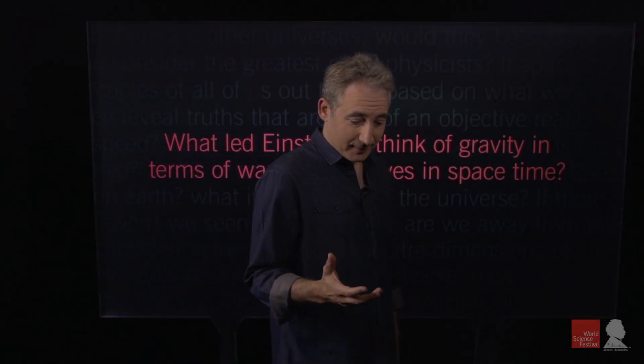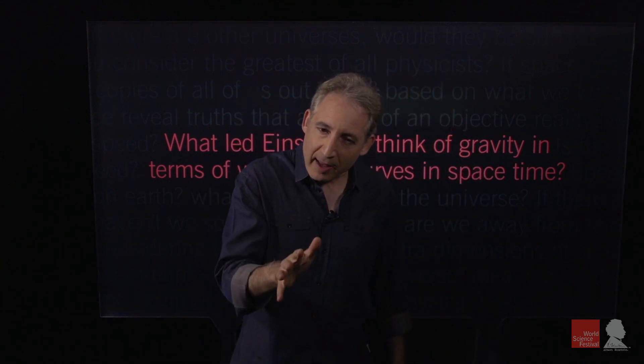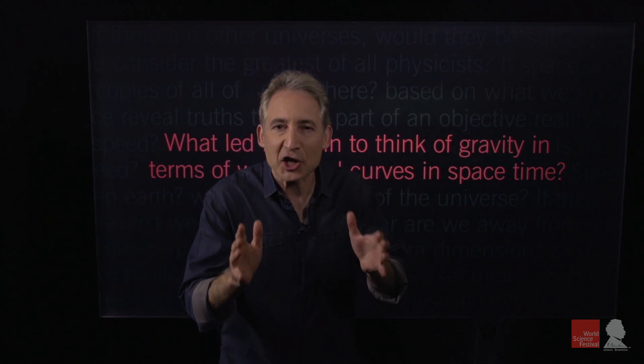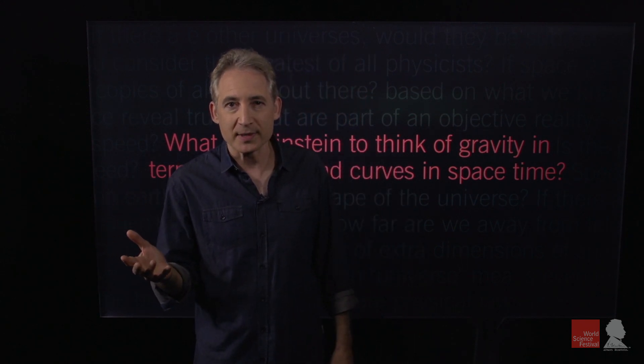Einstein's big breakthrough was the realization that he needed to describe gravity in terms of a kind of crazy sounding idea: warps and curves in space and time. Now how did he come up with this idea?